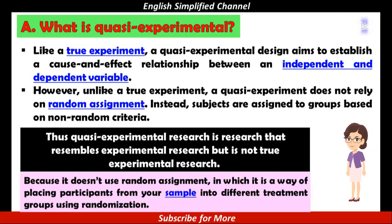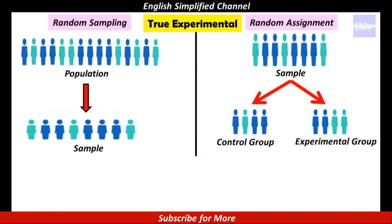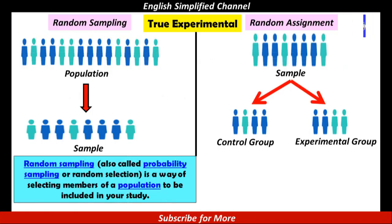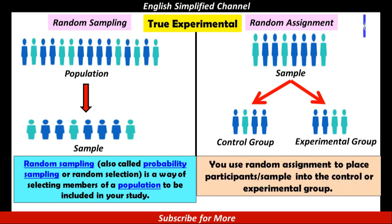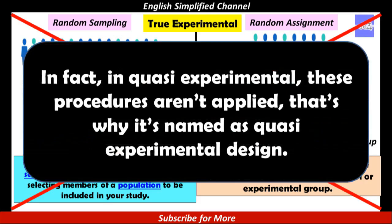Because it doesn't use random assignment, which is a way of placing participants from your sample into different treatment groups using randomisation. A true experimental should apply random sampling and random assignment in selecting the sample. Random sampling, also called probability sampling or random selection, is a way of selecting members of a population to be included in your study. While you use random assignment to place participants or sample into the control or experimental group. In quasi-experimental, these procedures aren't applied, that's why it's named as quasi-experimental design.